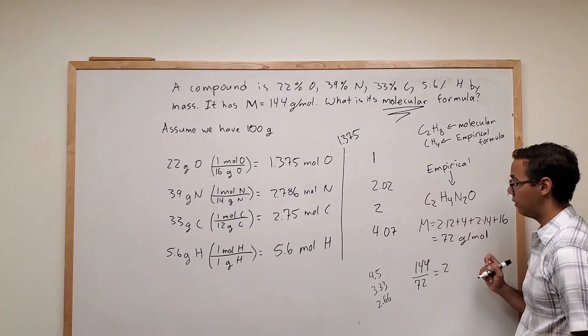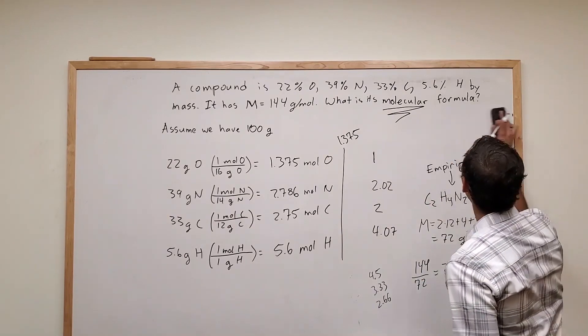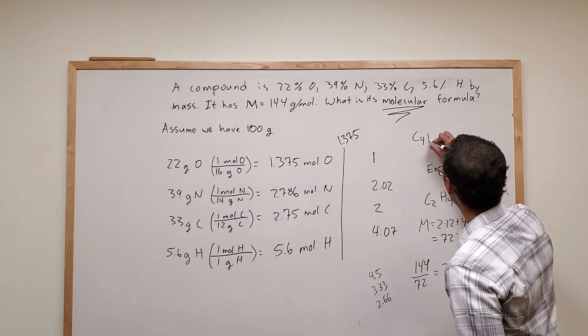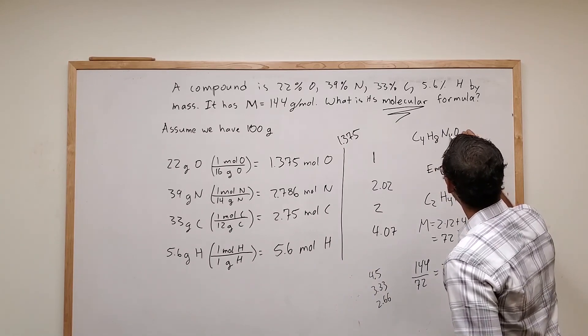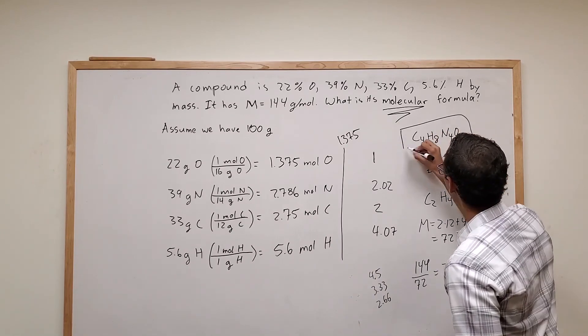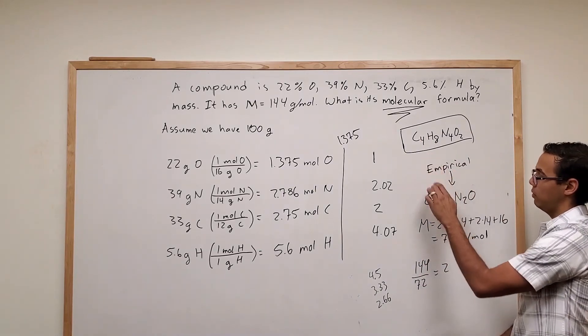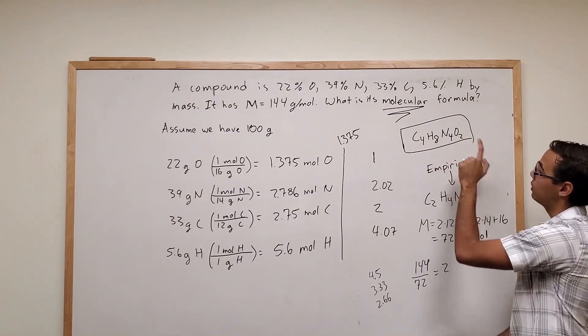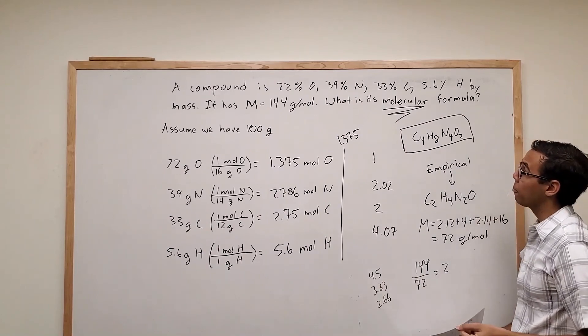Go ahead and erase these. And voila. 2 times 2 is 4, 4 to 8, 2 to 4, 1 to 2. And now we have our molecular formula.